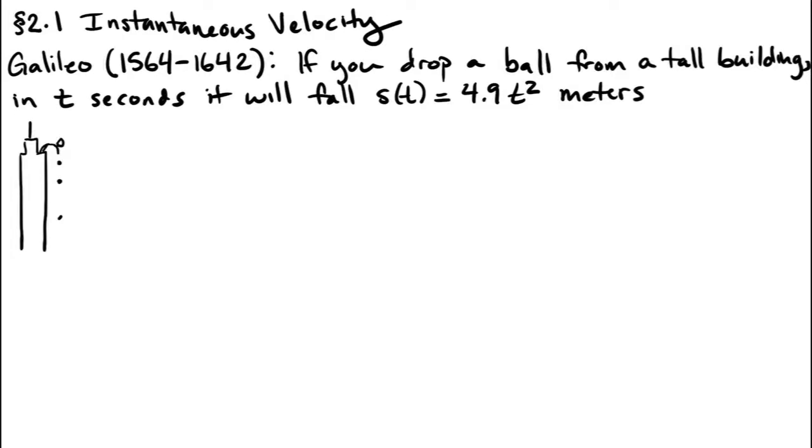Galileo discovered that if you drop a ball from a tall building, in t seconds it will fall 4.9 times t squared meters. This means the ball is not falling at a constant speed; the distance it travels in one second changes depending on which second you're looking at. Since the speed is changing, one might wonder how to figure out what it is at a given time.